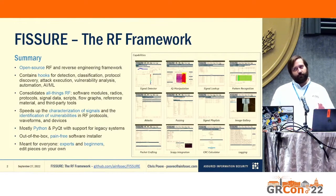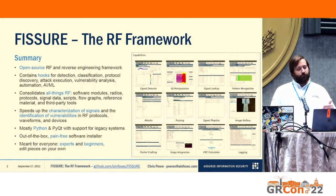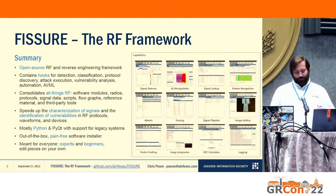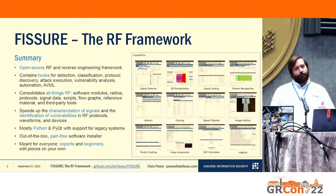That's kind of what's inside the tabs of the GUI. On the right are different pictures of those tabs — it's just one big main GUI with a bunch of tabs that do different features. It's written mostly in Python and PyQT, and it has support for legacy systems for different versions of Ubuntu and Python and PyQT, trying to make it easy for just about anyone to get it installed and working. It comes out of the box, and I hope someday to be a completely pain-free installer. It's meant for everyone — for experts, for beginners. It's designed so that you can go in and edit the pieces on your own and make it suit your needs.